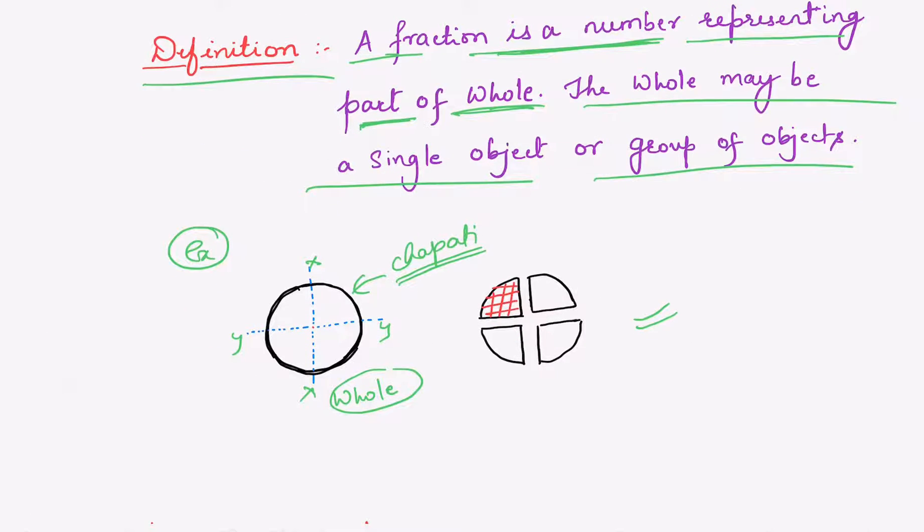I have shaded one region with red color. Now what do you think about this shaded region? What portion of chapati is shaded or what is the number of this shaded region? What this shaded region indicates? As you can see, there are in all four parts and out of four parts, one part is shaded.